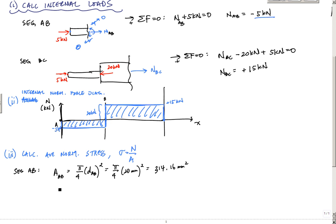And then, let's also do segment BC at the same time. So segment BC, right here, the area ABC is equal to pi over 4 DBC, the diameter of BC squared, which is pi over 4 times 50 millimeters squared. And this would be 1,963.50 millimeters squared, right there.